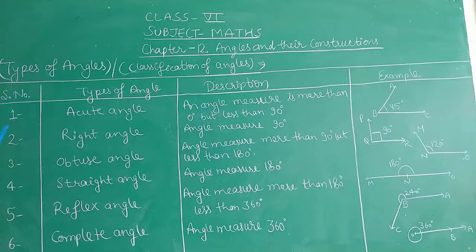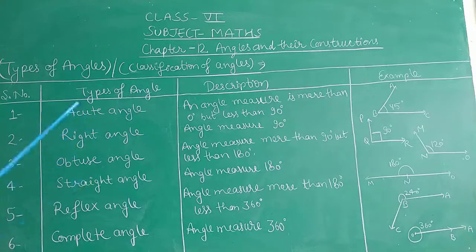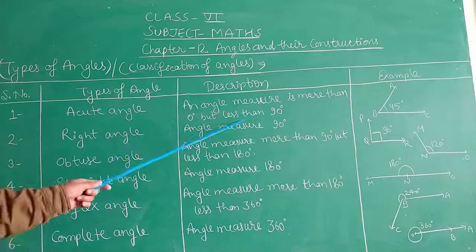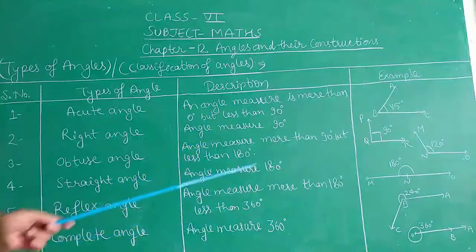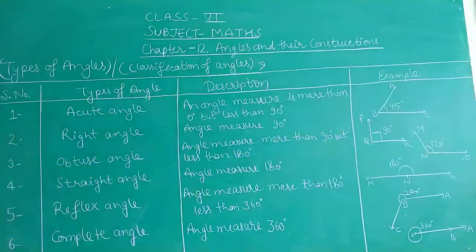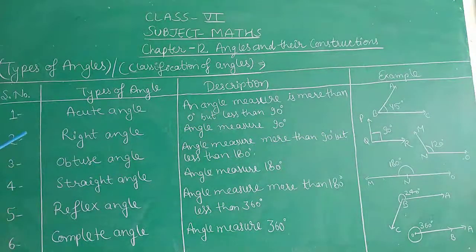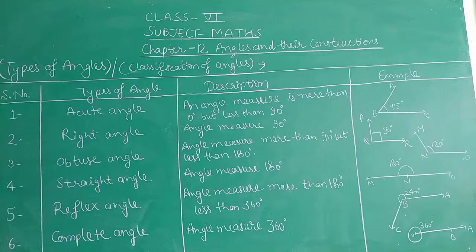The second type is right angle. The angle measuring exactly 90 degrees is called a right angle. See in the figure — angle PQR is a right angle. It has only one measurement, that is 90 degrees.